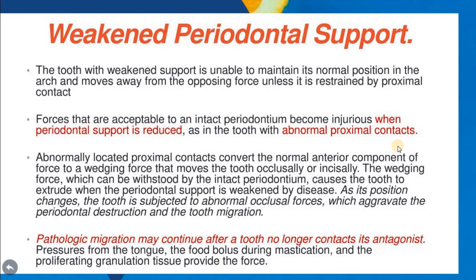Pathological migration may continue after a tooth no longer contacts its antagonist, because pressure from the tongue, the food bolus during mastication, and the proliferating granulation tissue provide forces that move the tooth. Sometimes missing teeth will cause a physiological movement rather than pathological movement — there is no antagonist and extrusion occurs, and if there is no periodontal disease it may eventually cause weakened support and lead to periodontal disease.